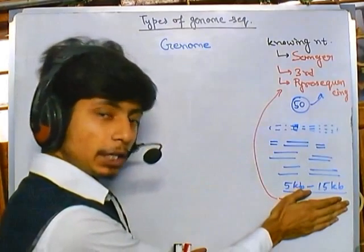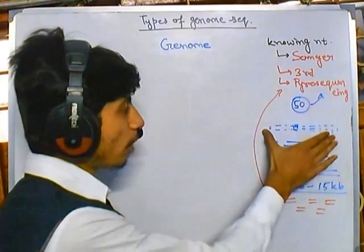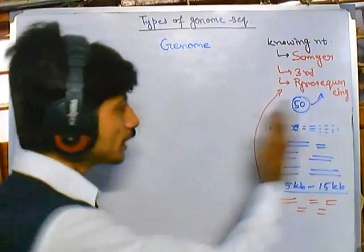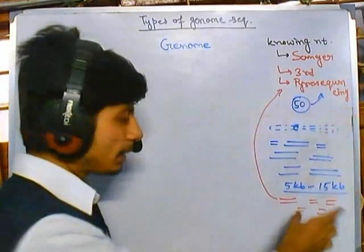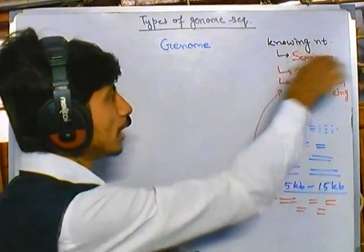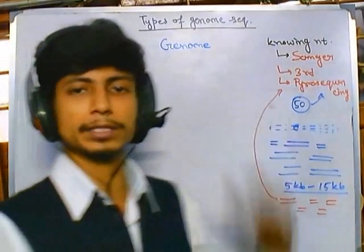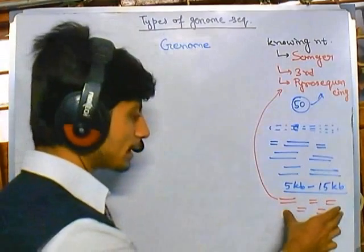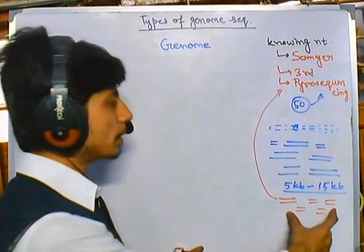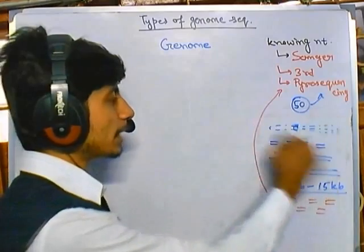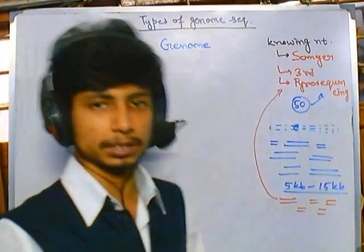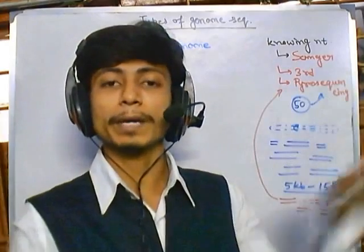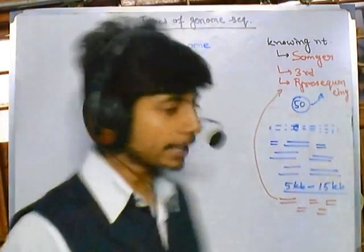What creates the most problem is that we need to align these sequences again to go back to the actual form — to tell which part of this fragment is present where in the original chromosome. Because we just fragmented them and got small sequences, we then need to connect the dots to get the sequence of the whole chromosome. That is the biggest question.